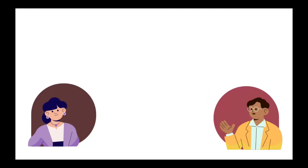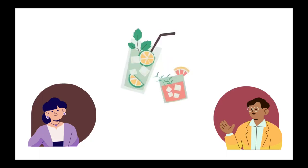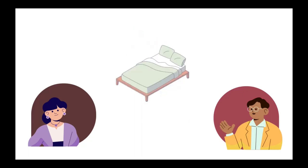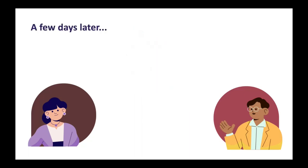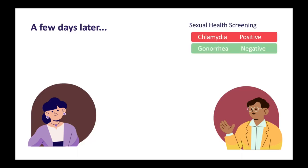They met as lots of couples do these days on Tinder. They've been chatting for a while, they decided to go for drinks, the day went well, and they ended up sleeping together. A few days later, Raj decides to get a sexual health screen, just to be safe, and finds out that he's positive for chlamydia.